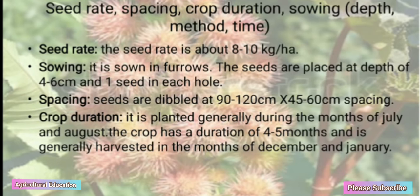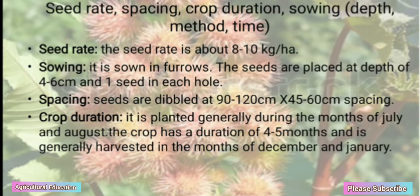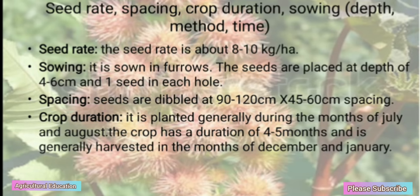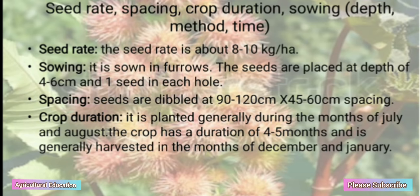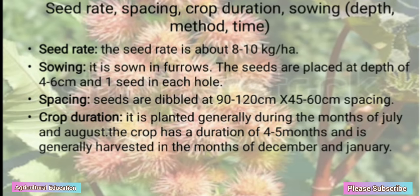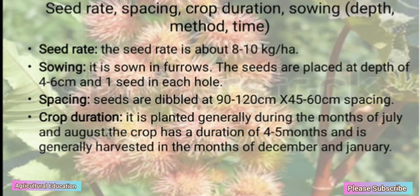Seed Rate and Spacing — Seed rate: About 8-10 kg per hectare. Sowing: It is sown in furrows; seeds are placed at a depth of 4-6 cm, one seed in each hole. Spacing: Seeds are dibbled at 90×120 cm or 45×60 cm spacing. Crop duration: Planted generally during July and August; the crop has a duration of 4-5 months and is generally harvested in December and January.